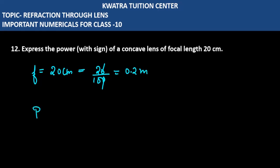Now, what do we need to do? We need to calculate power with a sign. So the formula of power is 1 over f, and 1 over 0.2 will be placed for the focal length. Removing the decimal, 10 by 2, how much is it? It is 5 diopter.